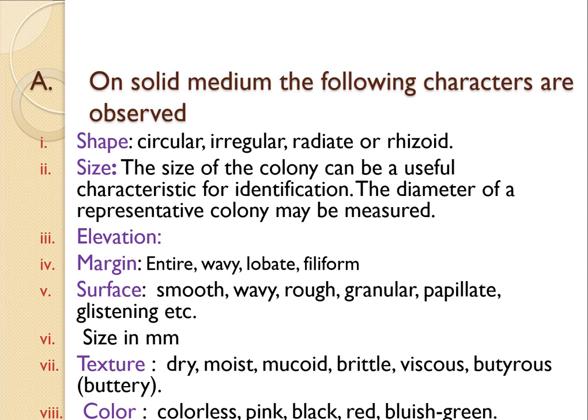The following characteristics can be observed on the petri plate when microorganisms are inoculated. We can study the shape of the colony — whether it is circular, irregular, radiate, or rhizoid. Then we can study the size of the colony, which is useful for characterizing and identifying the microorganism. The diameter of a representative colony may be measured to determine which microorganisms may be present.